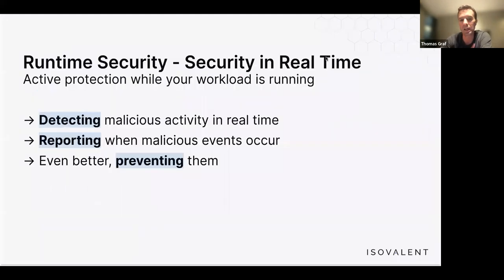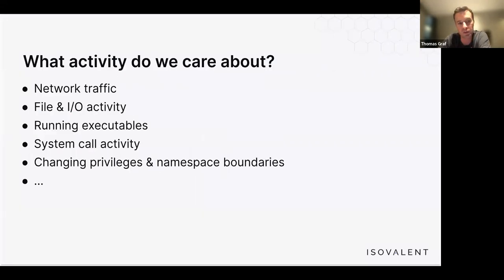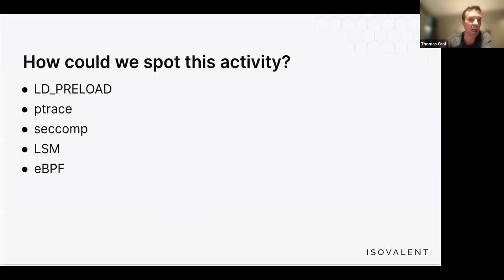Why did we create Tetragon? Runtime security and observability must be done in real time. When protecting running workloads, we need to detect malicious activity in real time, report when malicious events occur, and ideally prevent them before any damage is done. The key activities to monitor include network traffic, file I/O activity, process execution, system call activity, and changes in privileges and namespace boundaries. This has been done in various ways in the past, which we'll compare against Tetragon.